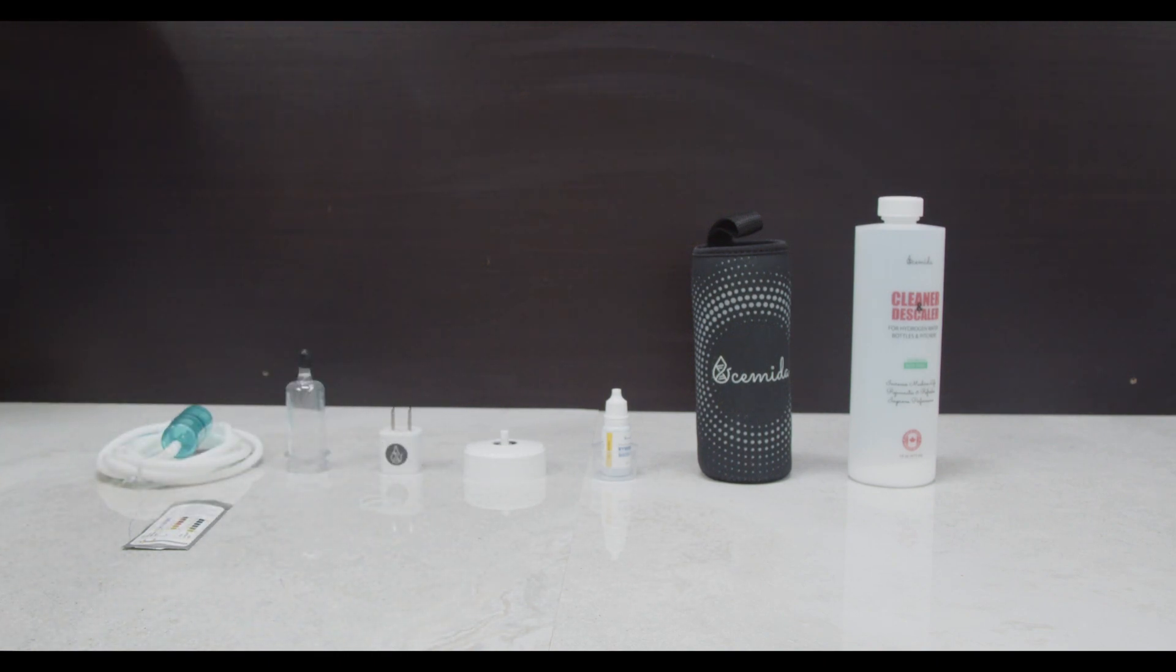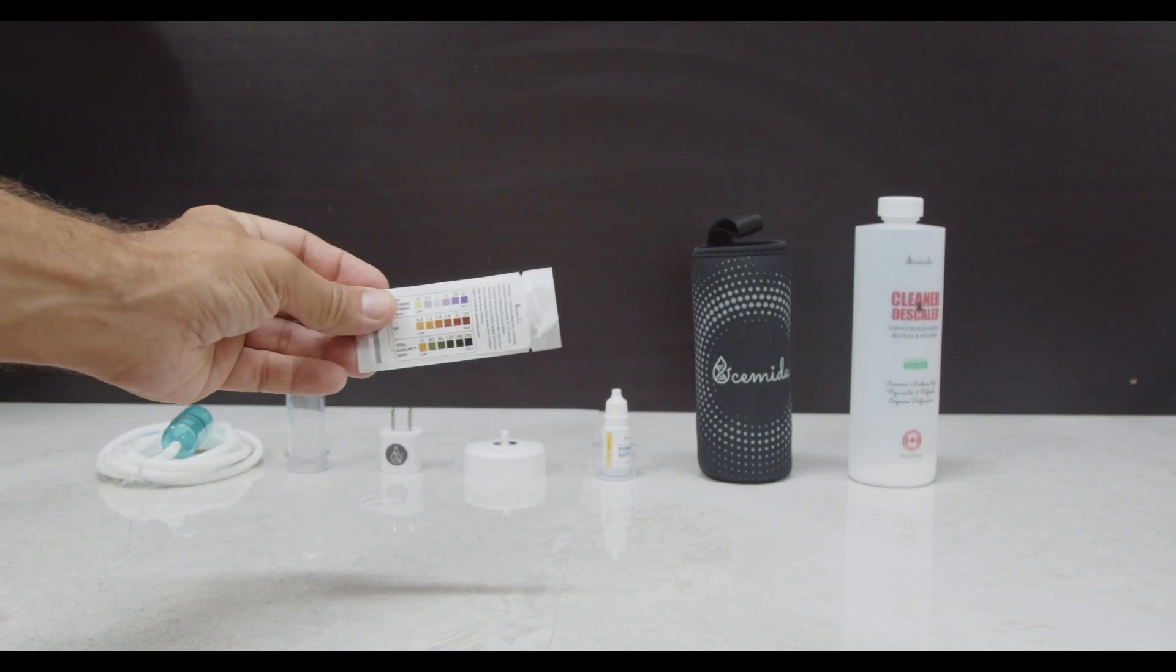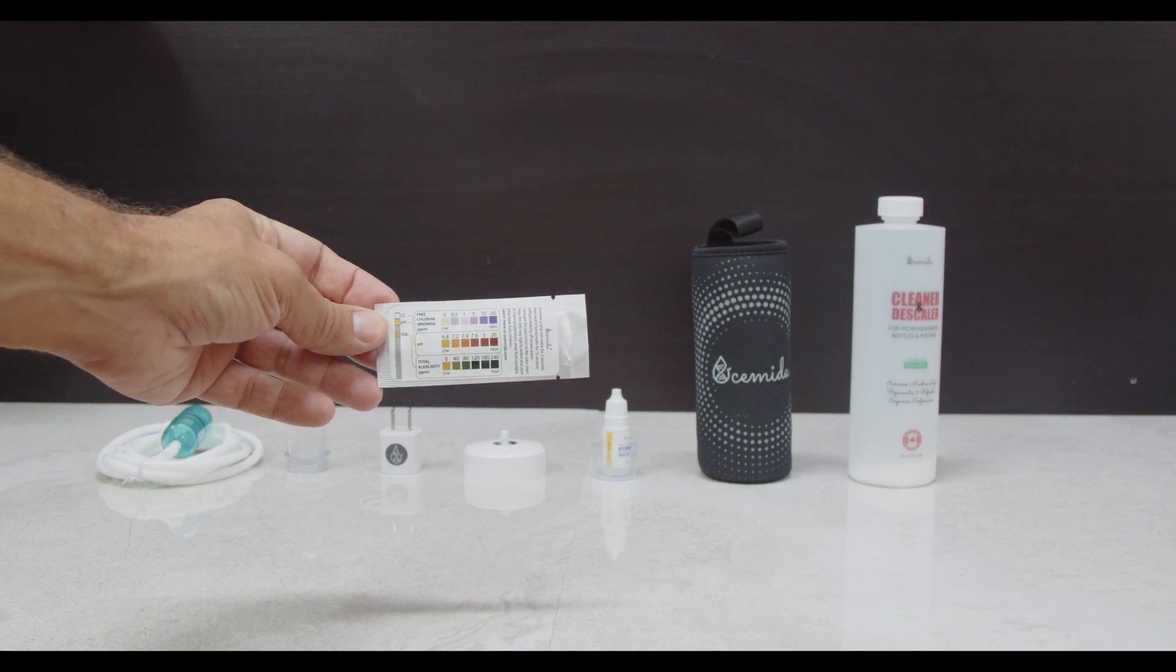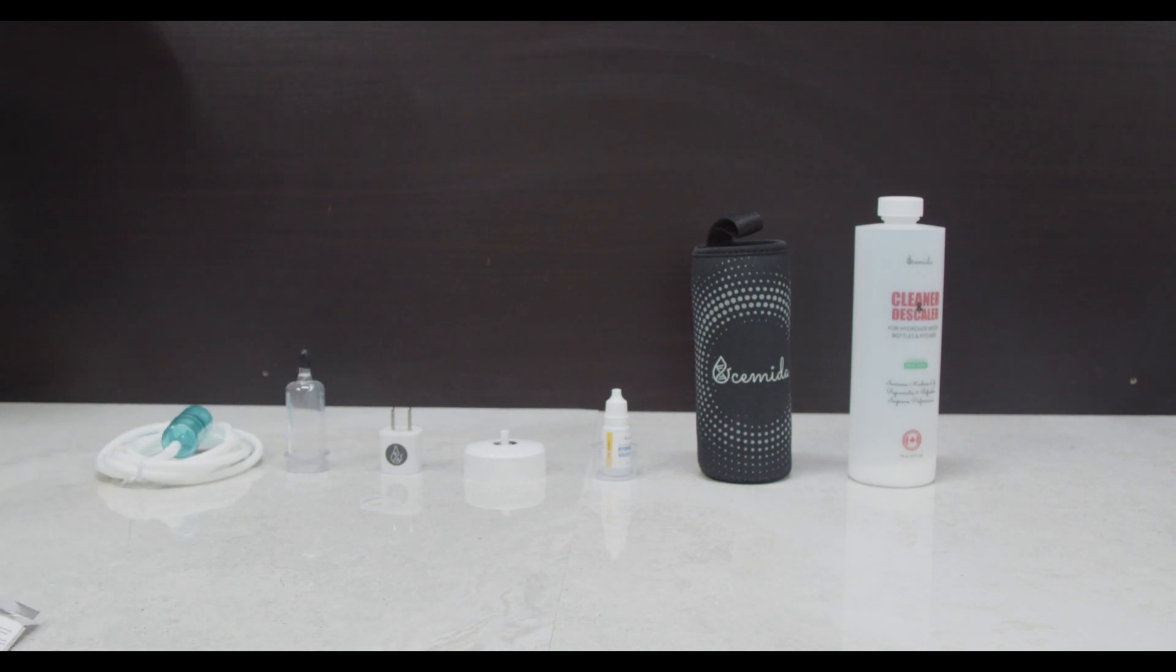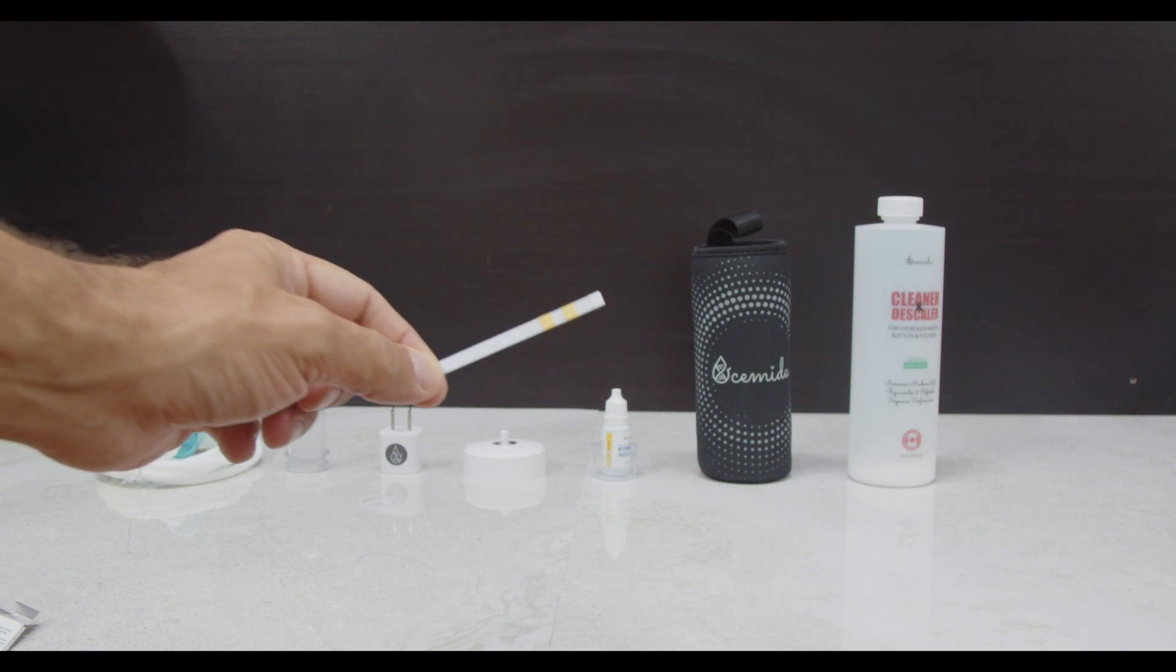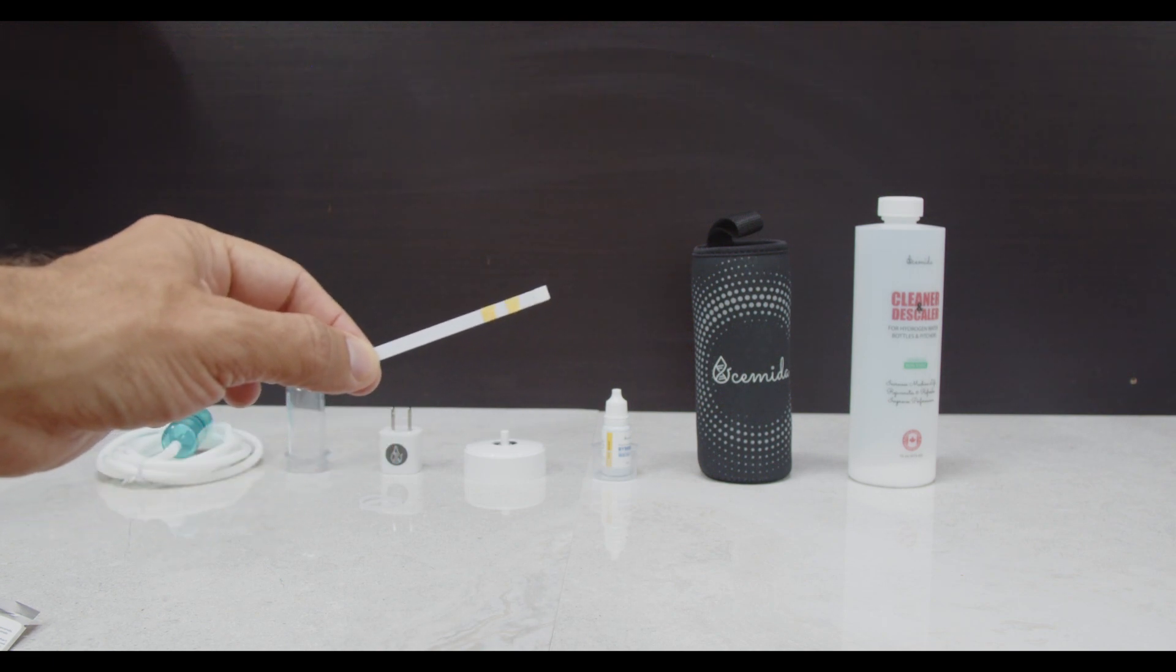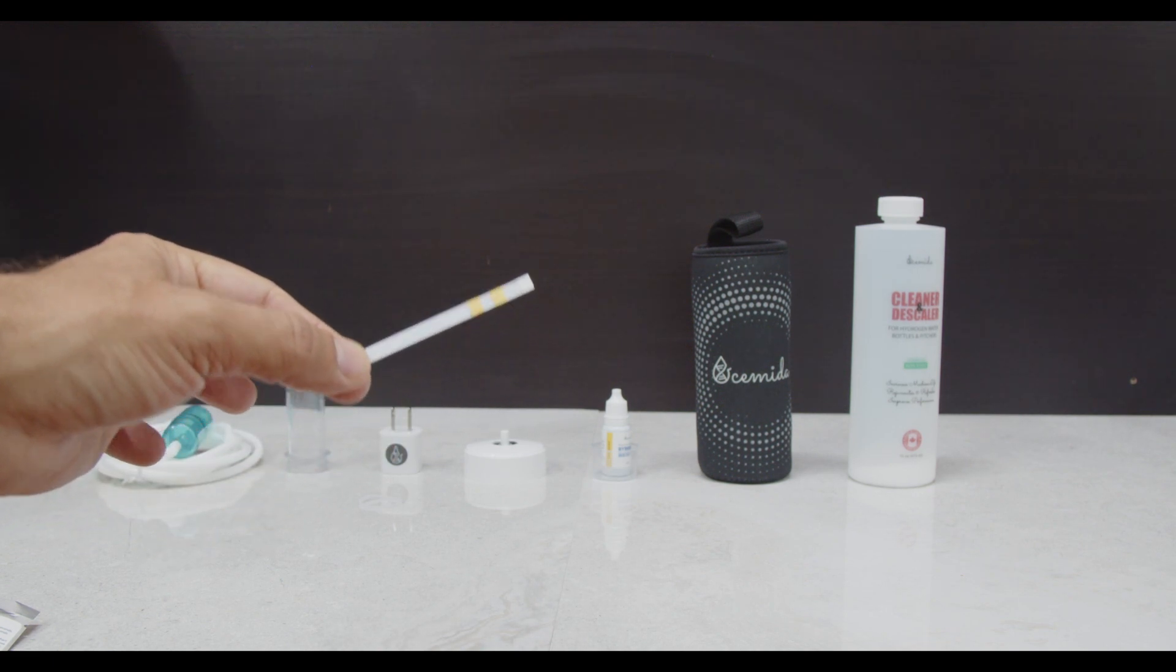These strips measure water quality before and after using the hydrogen water generator. They're similar to those used for swimming pools. Simply dip them in water and compare the colors with the chart on the pouch. These strips help determine if your water is too alkaline, which could damage the device.